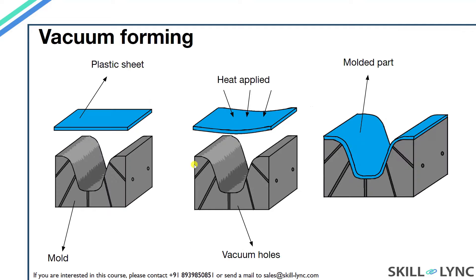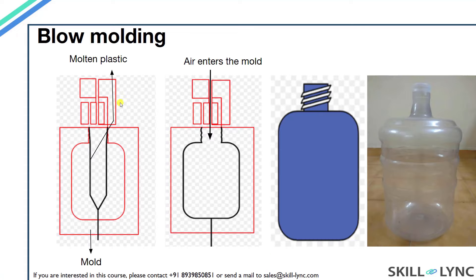In vacuum forming, a plastic sheet is placed over the mold and clamped. The sheet is then heated, making it more flexible. A vacuum formed at the bottom of the container pulls the sheet so that it takes the shape of the container. Food containers are one example of a vacuum formed part.